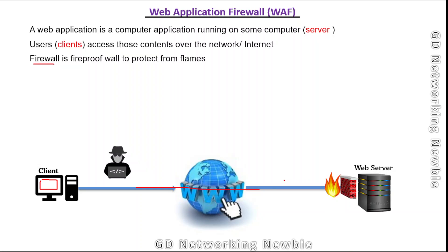These flames represent malicious traffic — malicious packets with bad intentions that want to reach our web application to exploit or destroy it. These web applications need to be protected, so we have the firewall. The firewall must decide whether a packet arriving and trying to reach the protected side should be allowed through or dropped.